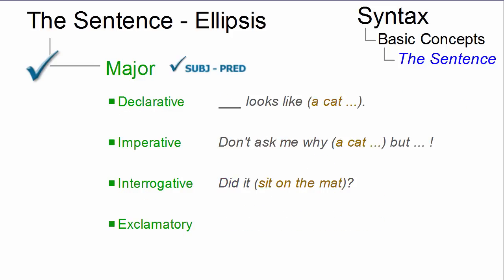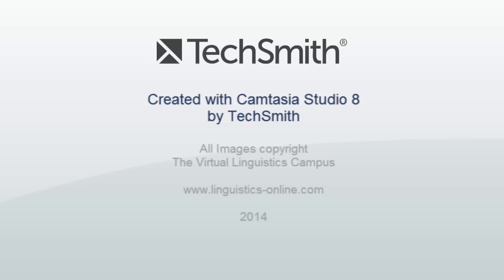Note that major sentences can be elliptical, that is, some normally obligatory element of a grammatical sentence may be missing, but can be recovered.